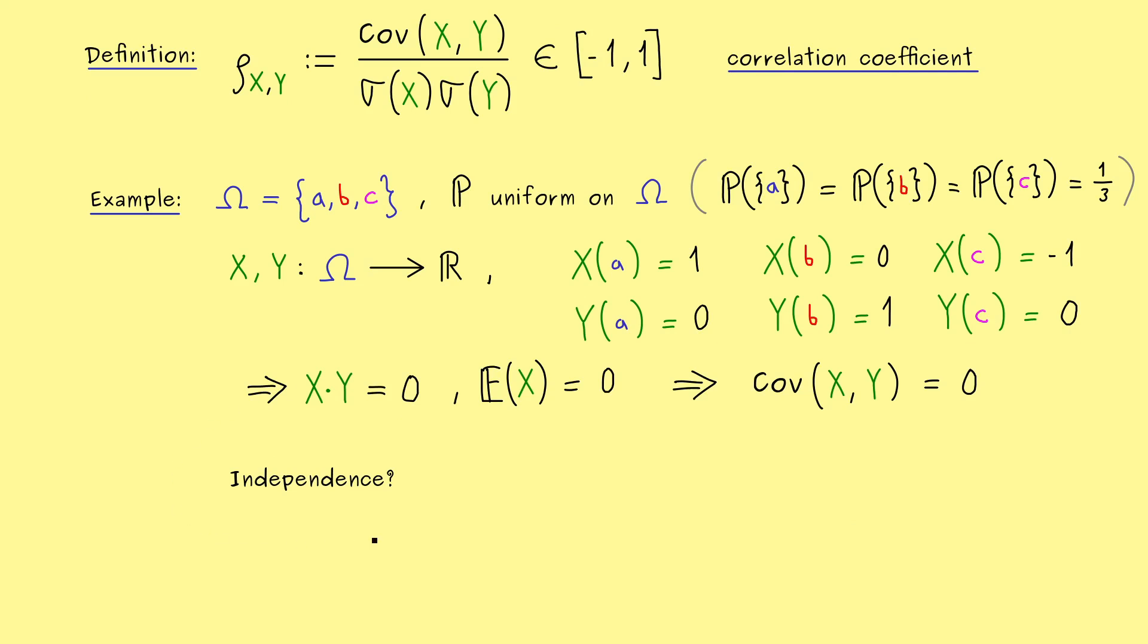Therefore, now the remaining question is, what is about the independence? And there you have to recall, what does it mean, that two random variables are independent? It simply means, that the two events, X is less or equal than x and Y is less or equal than y, are independent events. More precisely, it means, that the probability of this event can be written as a product of two probabilities.